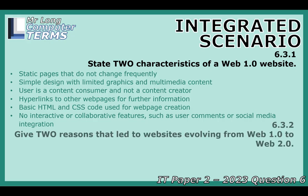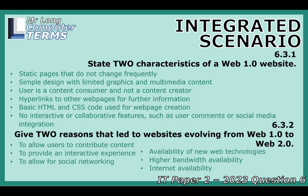What drove the change from static Web 1.0 to the interactive Web 2.0 we have now? A few big things converged. One was user desire — people wanted to participate more, share their thoughts, pictures, and connect with others, not just consume. That led to blogs, forums, and eventually social media. Alongside that, the technology evolved: new programming languages, databases, ways to make sites dynamic. Crucially, internet speeds got much faster and more people got online. That combination made Web 2.0 possible — interactive, user-generated content, richer media.